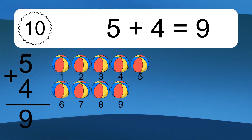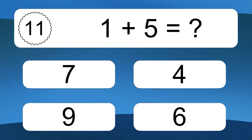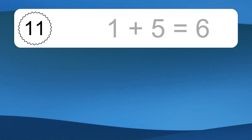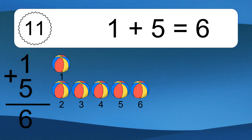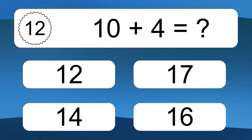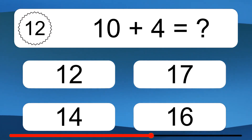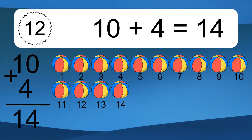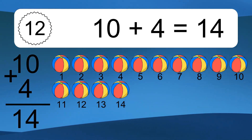Let's count it: 1, 2, 3, 4, 5, 6, 7, 8, 9. Let's count it: 1, 2, 3, 4, 5, 6, 7, 8, 9. 1 plus 5 equals what? 1 plus 5 equals 6. Let's count it: 1, 2, 3, 4, 5, 6. Let's count it: 1, 2, 3, 4, 5, 6, 7, 8, 9, 10, 11, 12, 13, 14.